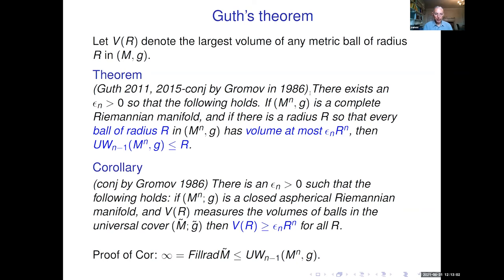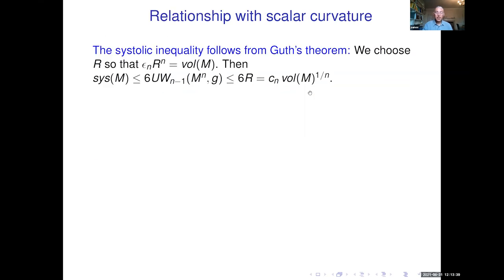As a corollary, if we have a closed aspherical Riemannian manifold, then the volume growth of the universal cover is at least ε_n · R^n. This follows by contrapositive from Guth's theorem: since the filling radius of the universal cover of an aspherical manifold is infinite, the Urysohn width is infinite, so the volume cannot be ε_n · R^n for any R. The systolic inequality also follows from Guth's theorem: choose R so that ε_n · R^n equals the volume, then the systole is smaller than the Urysohn width, which is less than 6R = C_n · vol^(1/n) by Guth's theorem.